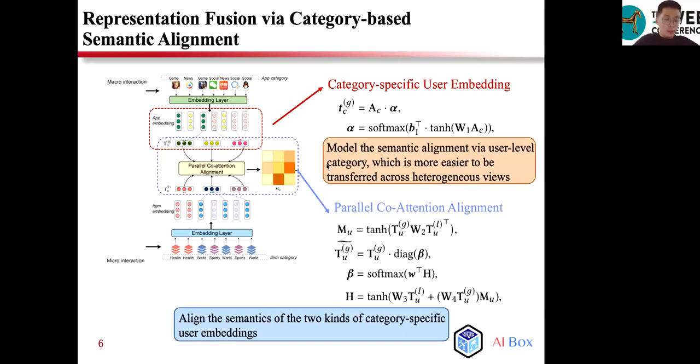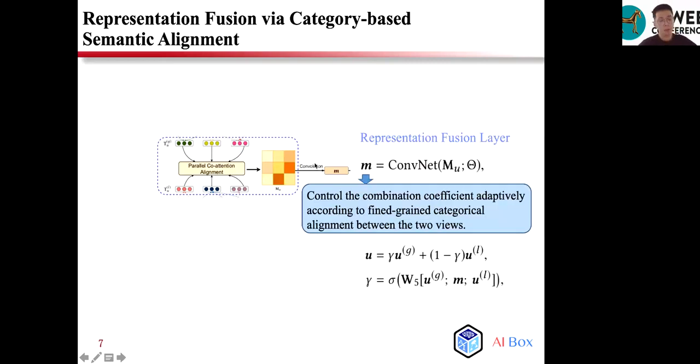Next, we study how to align the semantics of the two kinds of category-specific user embeddings. Inspired by the work that associates images with text captions, we utilize the parallel co-attention mechanism to implement the micro-macro category alignment. By incorporating the alignment matrix, the categories of the two views are correlated and aligned at the user level. Since the matrix M reflects the overall alignment characteristics between the two views for the user, we utilize the convolutional neural network to encode the alignment feature into a vector, following recent work on image-text matching models.